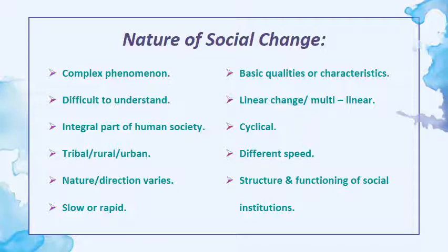Nature of social change refers to its basic qualities or characteristics. Sometimes changes proceed from one stage to another in a single direction — this is an example of linear change. It may also be multilinear, meaning changes can take place in several different directions at the same time. Change may be cyclical also. The speed of change is different; changes may take place slowly or at a quicker pace. The term social change refers to changes in the structure and functioning of social institutions such as government, education, economy, marriage, family, religion, etc.